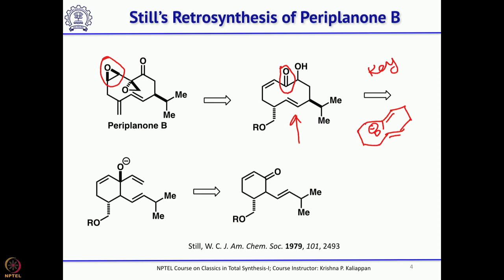If you have the beta-gamma unsaturated ketone — alpha, beta, gamma — you can simply add vinyl lithium or vinyl magnesium bromide to get the intermediate or precursor required for anionic oxy-Cope rearrangement. That can be obtained from a cyclohexanone which is commercially available or well known in the literature.